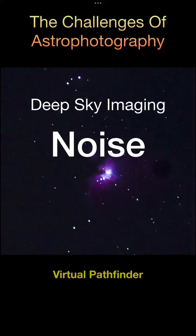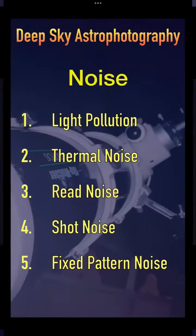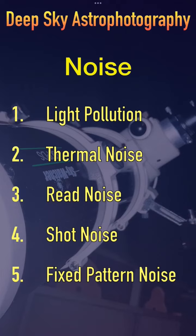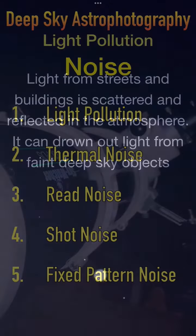When doing deep sky astrophotography there are various kinds of noise: light pollution, thermal noise, read noise, shot noise, and fixed pattern noise. All these sources contribute to the total noise in the images.